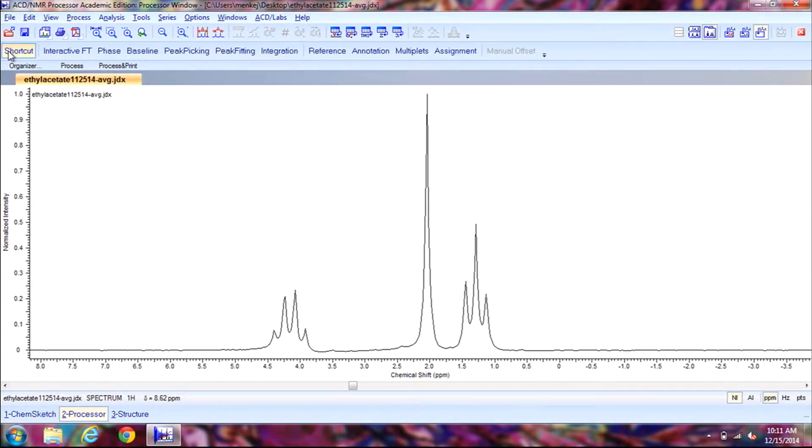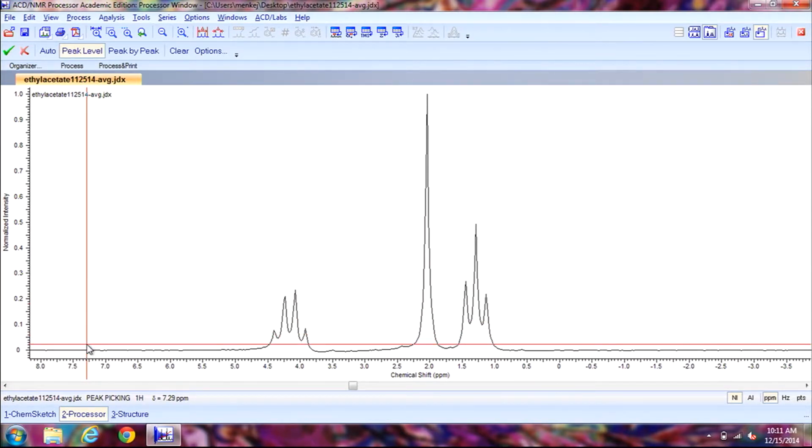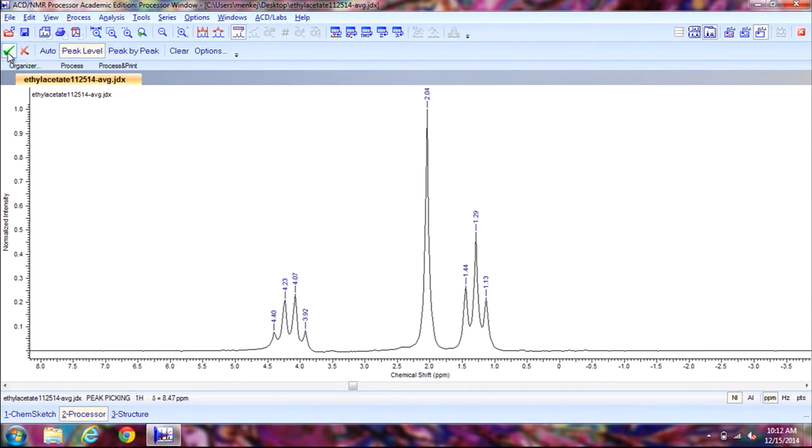Next we will click on peak picking and then click on peak level. This will bring up a red bar. What we want to do is leave all the peaks that we want in our sample to be above the red bar and any impurities left below it. So I'll drag it down to here and then click, and then again click on the green check mark to exit out.